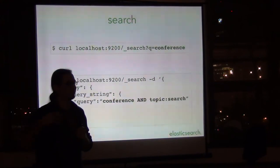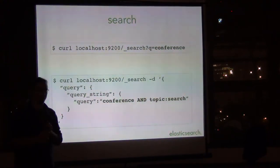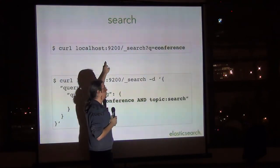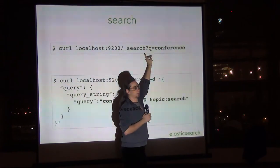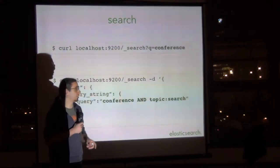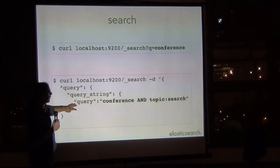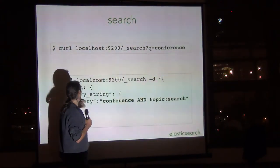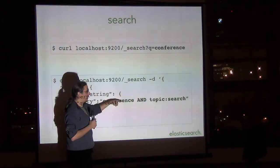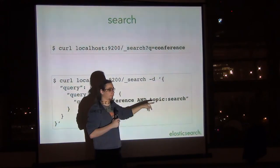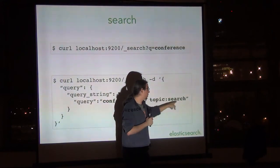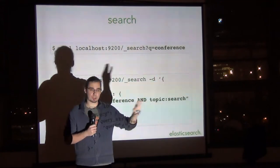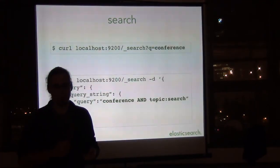What you actually expect from a data store that has 'search' in its name is that it will provide you with search capabilities. The first way to do it is you just call an HTTP request — just a GET — and you supply Q and any string, and it will actually look for that string. Internally that will translate into something like this: you're calling the underscore search endpoint, and you have a query which is of type query string, and the actual query searches conference across all fields, but we're only interested in the field 'topic' across all our documents.